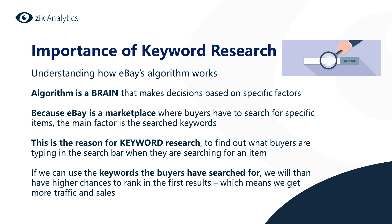The importance of keyword research. We have to understand how eBay's algorithm works. You might be asking yourself what is an algorithm? An algorithm is a brain, but a computer's brain that makes decisions based on specific factors. Now because eBay is a marketplace where buyers have to search for specific items, the main factor is the searched keywords.